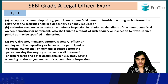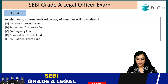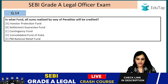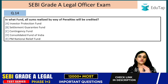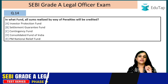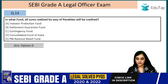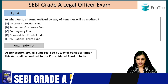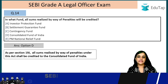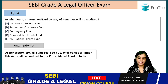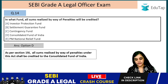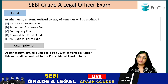Question 14: In what fund will all sums realized by way of penalties be credited? The answer is the Consolidated Fund of India — option D. According to section 19J, all sums realized by way of penalties under this Act shall be credited to the Consolidated Fund of India.